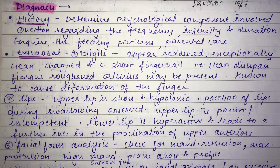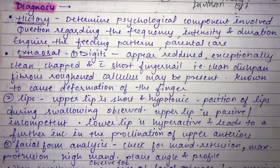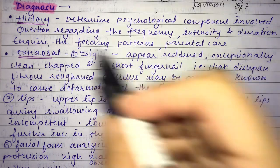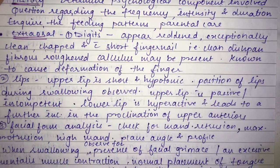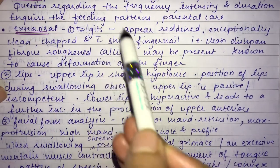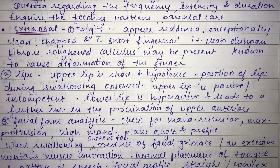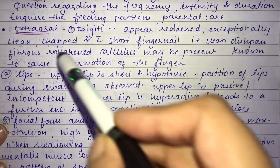For diagnosis, a positive history of the habit is first determined, including the frequency, intensity, and duration of the habit. Remedies tried at home, feeding patterns, and parental care of the child are also reviewed. Extraorally, the digits involved in the habit appear reddened, exceptionally clean, with short fingernails — described as a clean dishpan thumb. Fibrous roughened callosities may also be present on the digit.